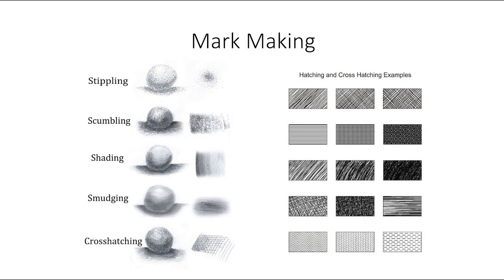On the left here we've got stippling, which is basically using the point of your pencil or pen. Scumbling is using a circular motion to create shading in your work. Then you've got gradual dark-to-light shading.